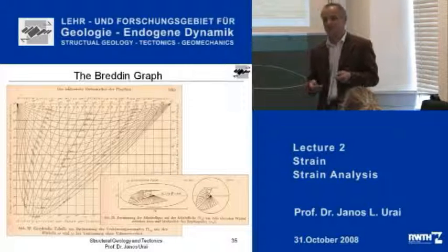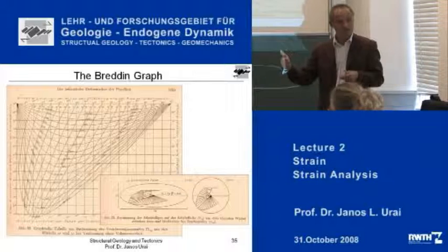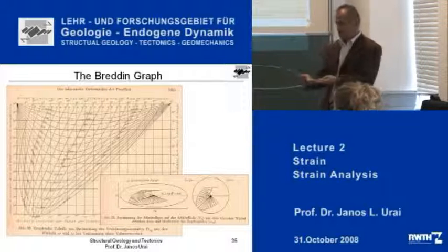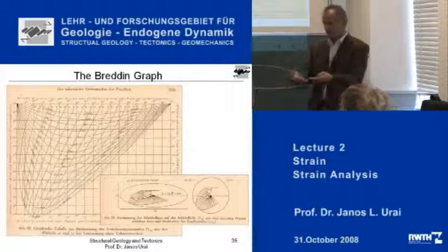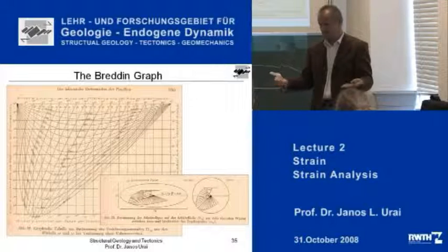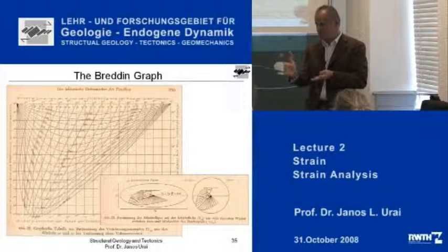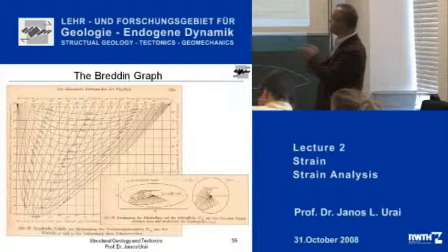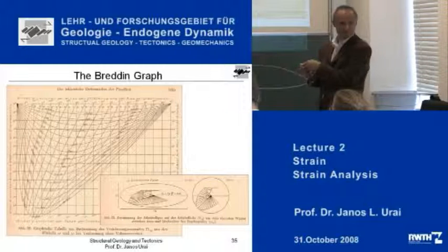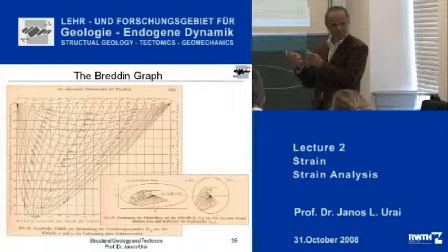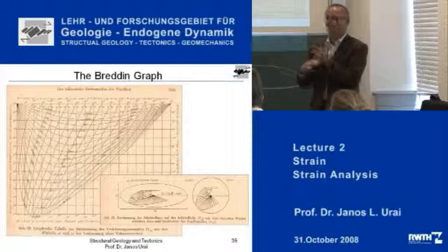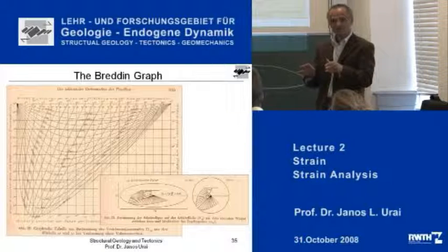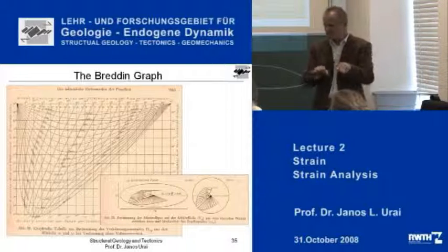In one of the tutorials you are actually going to do a Bredin analysis. You get a series of fossils on a plane and then you go and measure the orientation of the symmetry axis of the fossil and how much they are strained. You plot them in a diagram of orientation versus shearing angle. If you are lucky, one of the angles is 90 degrees, then you know where to start. Otherwise, you just take this diagram and move it around until it fits.